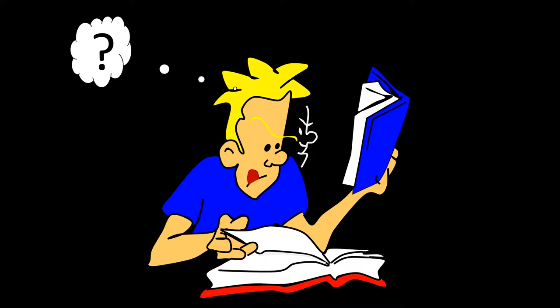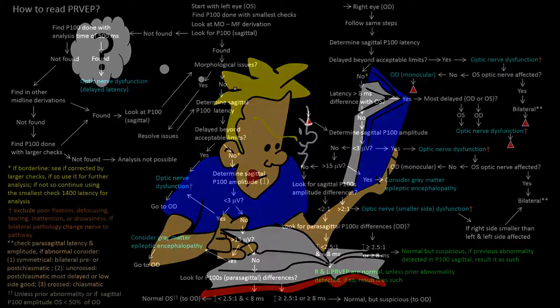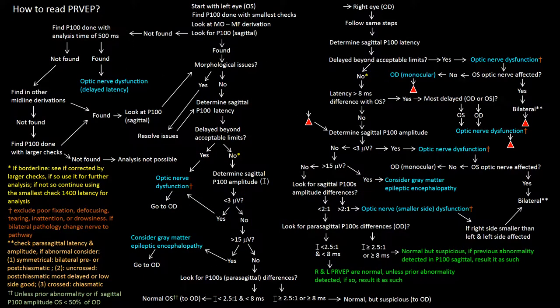The first question that comes to anyone's mind when first analyzing pattern reversal visual evoked potentials is where to start. With this in mind, I have created a chart that addresses this and other issues regarding reading pattern reversal visual evoked potentials. This chart works most of the time. I have labeled it the 'how to read pattern reversal visual evoked potential chart,' but throughout this talk I will refer to it just as the chart.